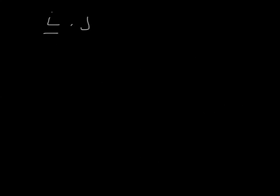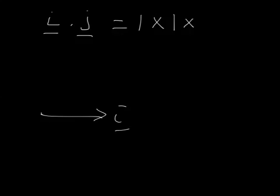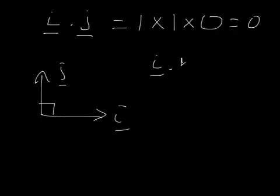Let's think about the dot product i dot j. It's the magnitude of vector i — that's 1 — times the magnitude of vector j — that's 1 — and the cosine of the angle between them. Well, i is in the x direction, j is in the y direction, the angle between them is 90°, and cosine of 90° is 0.